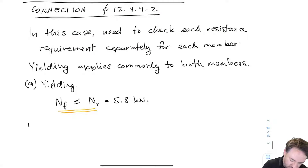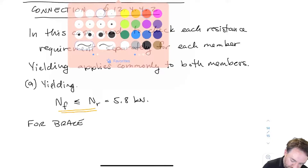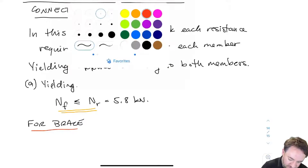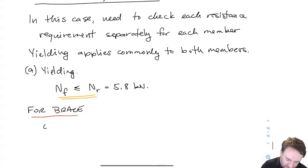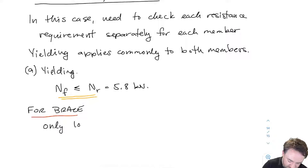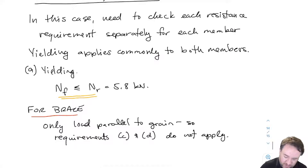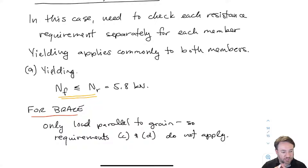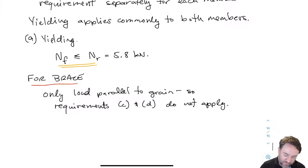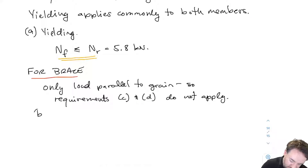Now we're going to go through the rest of the requirements separately for the brace versus the beam. Starting with the brace — the most recent checks we did — there's only load parallel to grain. So this is also the easier one. Since there's only load in the parallel-to-grain direction in the brace, we don't have perpendicular-to-grain checks to do (requirement C), and we don't have the interaction check to do (requirement D). So we're only going to check B.